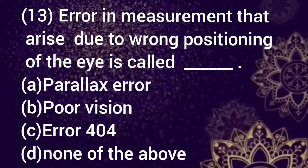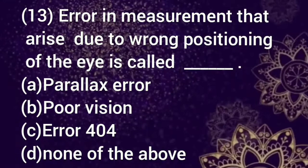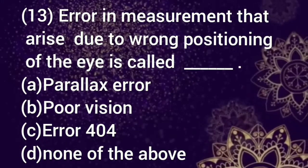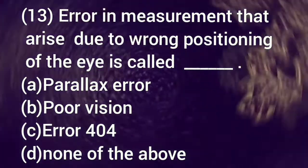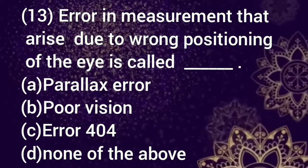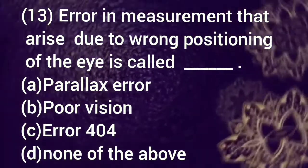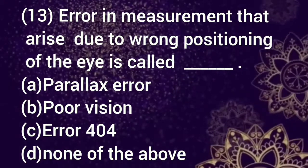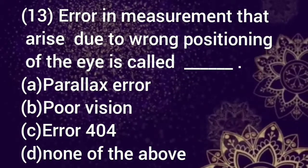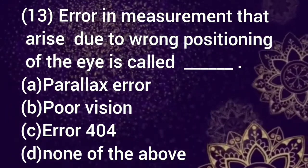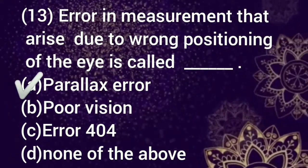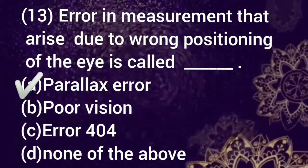Let's attempt question number 13. Error in measurement that arises due to wrong positioning of the eye is called dash. Option a: parallax error, b: poor vision, c: error 404, d: none of the above. Select your answer. The correct option is a, parallax error.